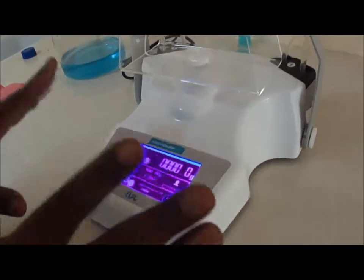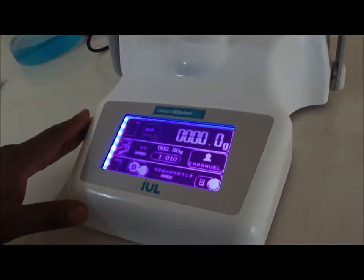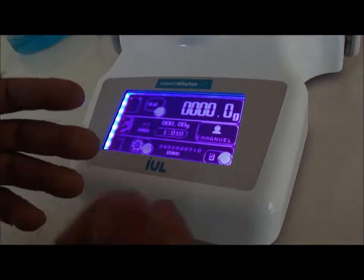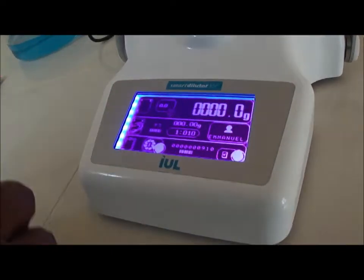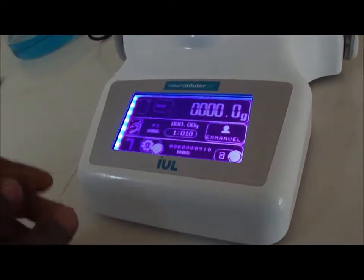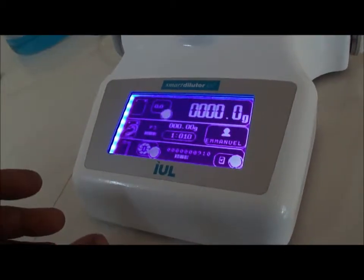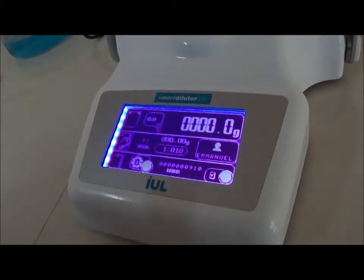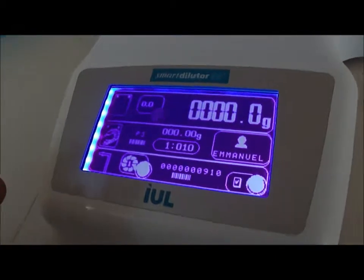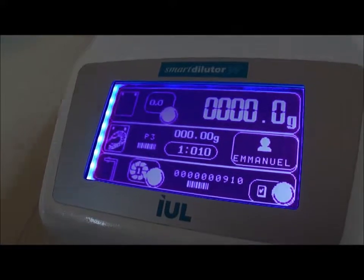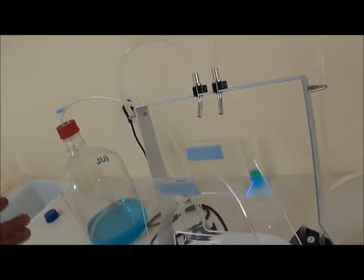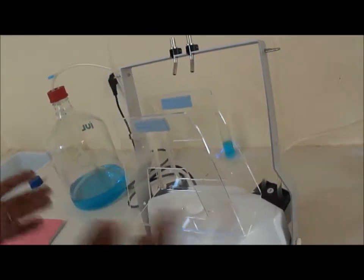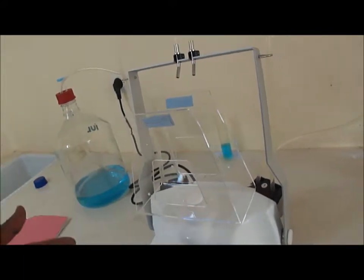One should know that there are two functions for this dilutor. One is the dilution, so for that you need a dilution factor, and the other one is dispensing. In the case of dispensing, you have a sample, you have targeted the final weight when you mix your sample with a diluent. That is dispensing. So that's why also you have two bottles, so you can use one for each of the functions according to the type of work you want.